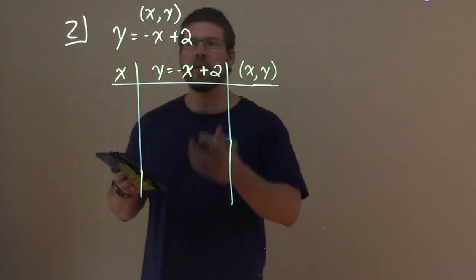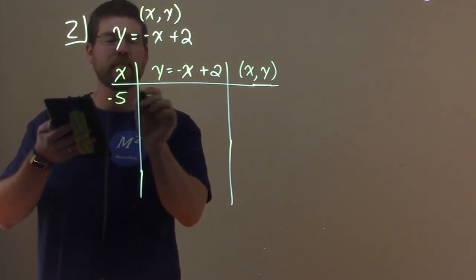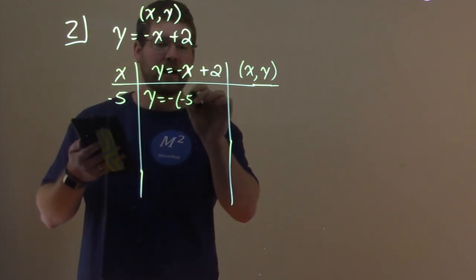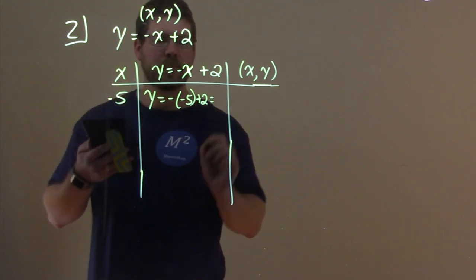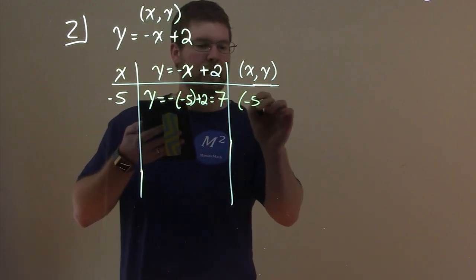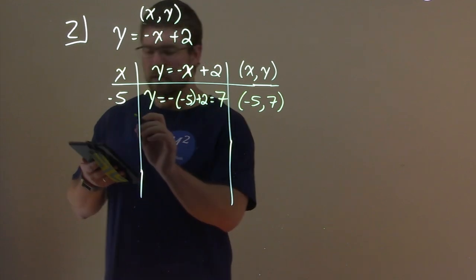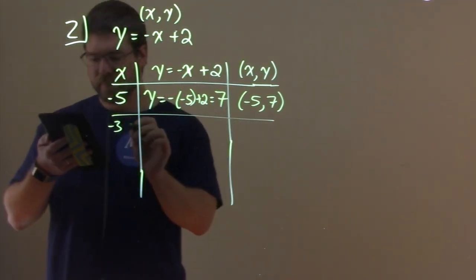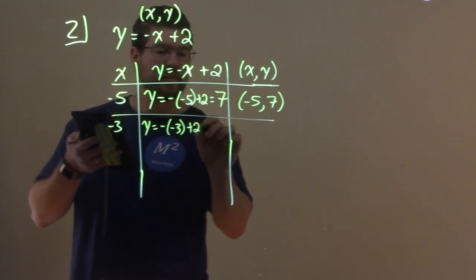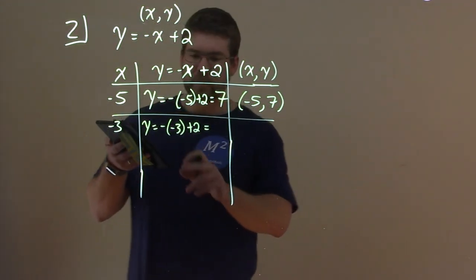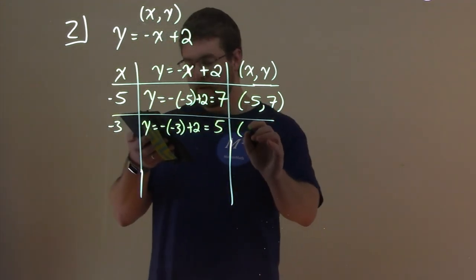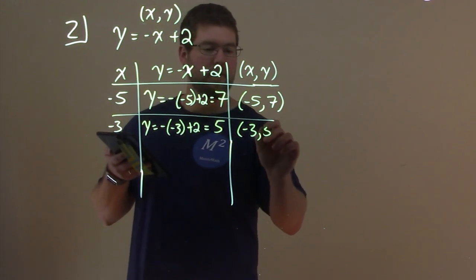The first value, we're going to take this equation and plug negative 5 in for x. We have y equals negative negative 5 plus 2. Negative negative 5 is positive 5, plus 2 is 7. So our coordinate point is negative 5 comma 7. Let's do it again. Negative 3. We have y equals negative, plug in negative 3 plus 2. Negative negative 3, positive 3 plus 2 is 5. So the coordinate point is negative 3 comma positive 5.